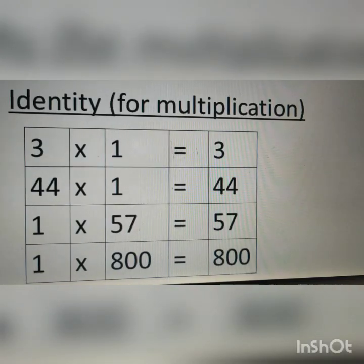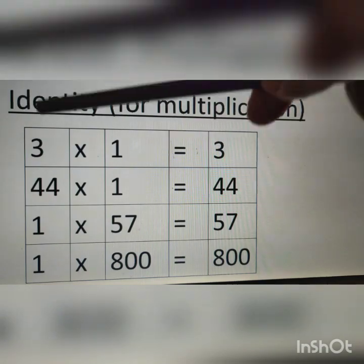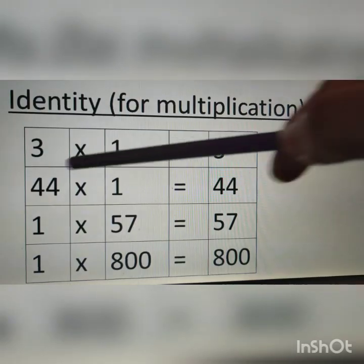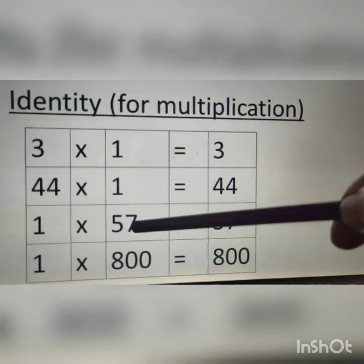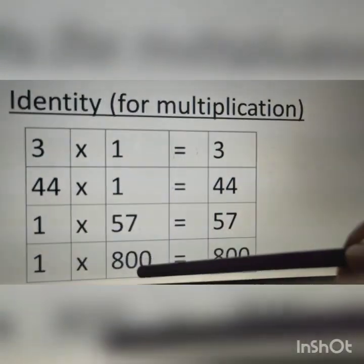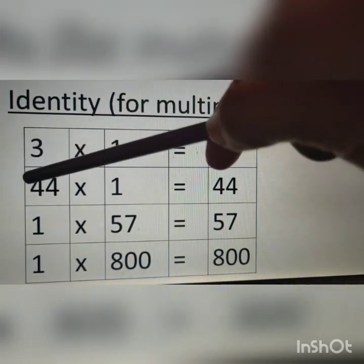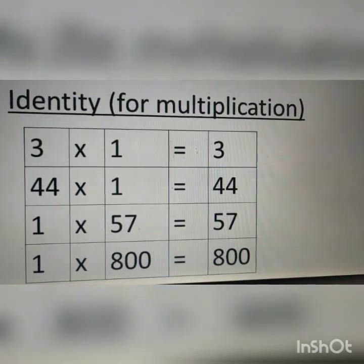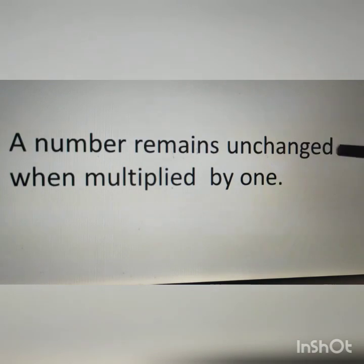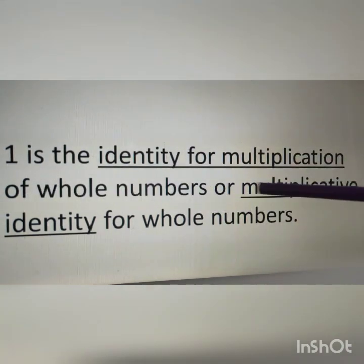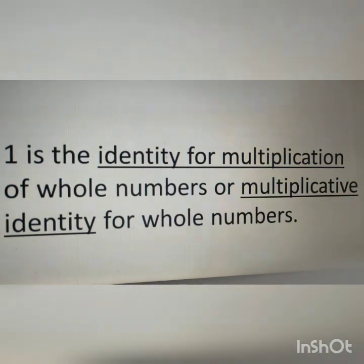Next is identity for multiplication. Here 1 is multiplied with different whole numbers: 3 × 1 = 3, 44 × 1 = 44, 1 × 57 = 57, 1 × 800 = 800. By multiplying 1 with any whole number, we get the same number — the number remains unchanged when multiplied by 1. Therefore 1 is the multiplicative identity for whole numbers.